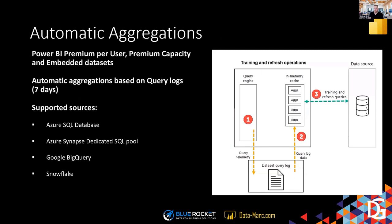Power BI is also capable of defining automatic aggregations — so you don't have to define them yourselves. This is only possible for certain data sources: Azure SQL database, a dedicated SQL pool in Azure Synapse, Google BigQuery, or Snowflake. If you have premium user or premium capacity, Power BI can check out the query logs from users and then define which aggregations are helpful — it adds them to your model, keeps them refreshed, and over time keeps training and learning which ones are used and necessary. That's a really powerful solution if applicable to your situation.